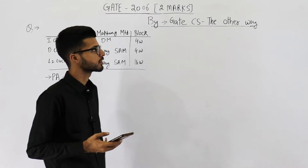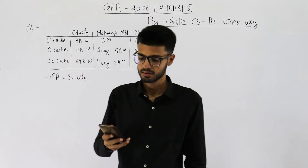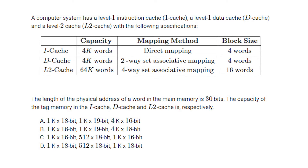Hello students, welcome back. I have a question from the GATE 2006 exam, it's for two marks. A computer system has a level one instruction cache (I-cache), a level one data cache (D-cache), and a level two cache (L2 cache) with the following specifications — capacity, mapping method, and block size. The length of the physical address of a word in main memory is 30 bits. The capacity of the tag memory in I-cache, D-cache, and L2 cache is respectively to be found.